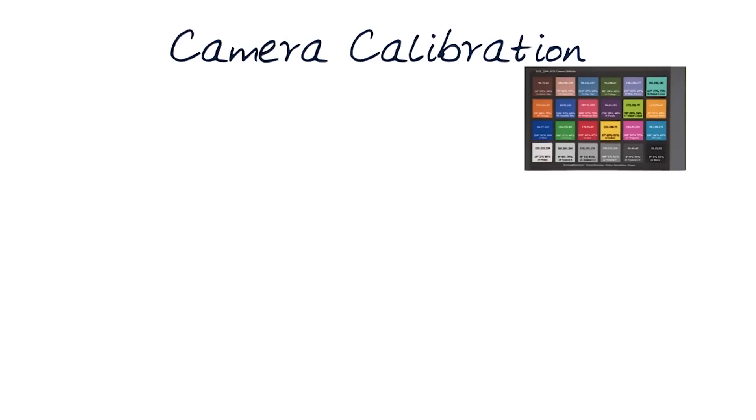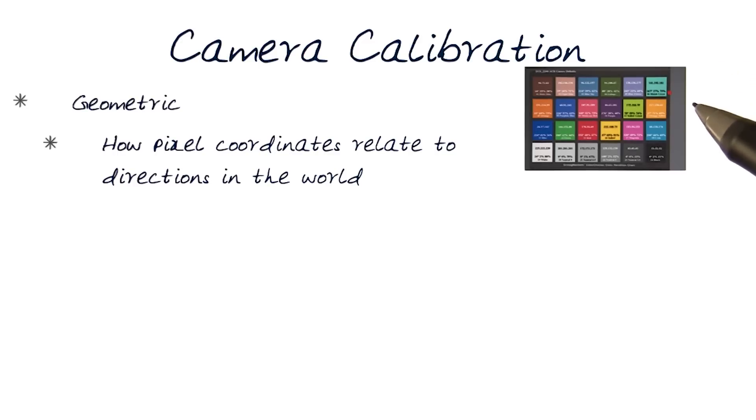First, let's talk a little bit about camera calibration. There are two different types of camera calibration. First is geometric calibration, where we're interested in how each and every pixel relates to directions, angles, shapes, and any kind of geometric information in the real world.